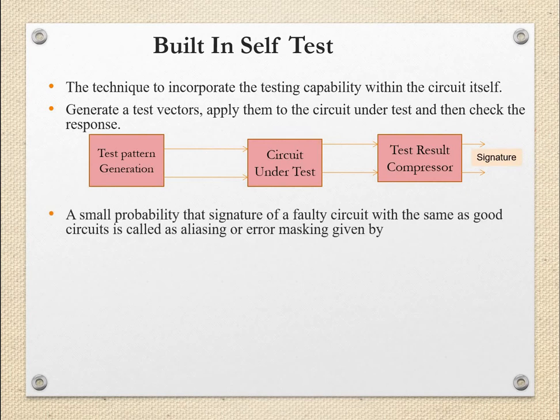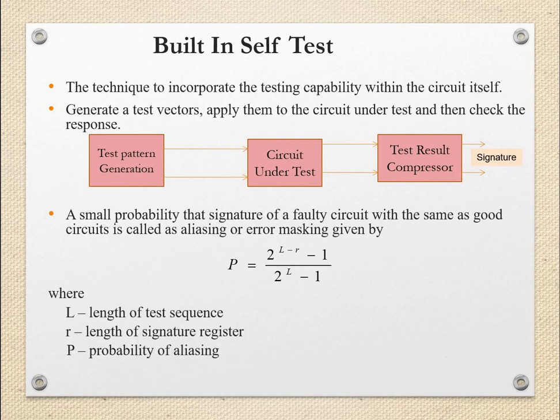A small probability exists that the signature of a faulty circuit matches that of a good circuit; this is called aliasing or error masking. The probability is very small and is given by P = (2^(L−R) − 1) / (2^L − 1), where L is the length of the test sequence, R is the length of the signature register, and P is the probability of aliasing.